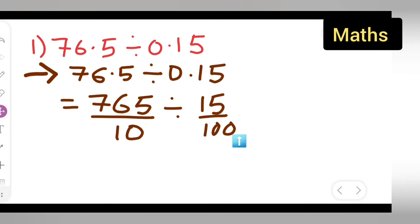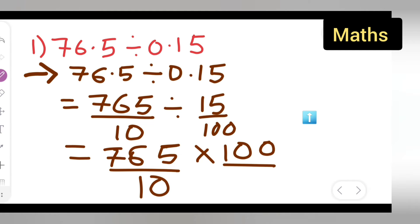Now, how to divide this? Write down 765 divide by 10, multiply it by 100 upon 15. You all have to take the reciprocal of 15 upon 100. When you are dividing 765 by 10 divided by 15 upon 100, you have to take the reciprocal of this number, that is 100 upon 15.